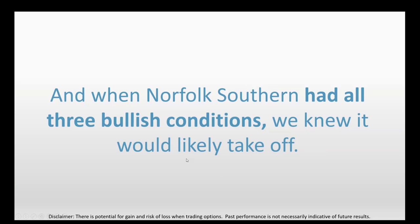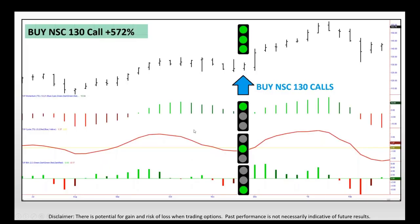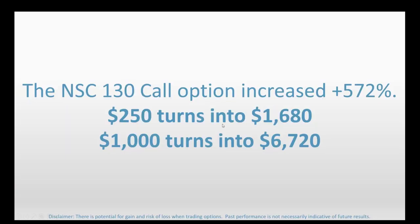When Norfolk Southern had all three bullish conditions, we knew it was likely to take off. Textbook: the momentum condition was there as the top green light, a very well-defined cycle, and the trough trigger all firing at the same time. We recommended buying the NSC 130 calls, and those jumped in value by 572%: $250 grows to $1,680, or $1,000 grows to $6,720.